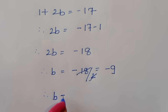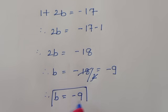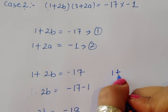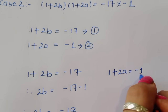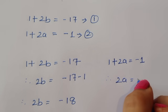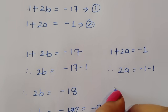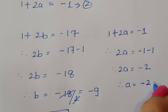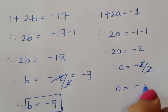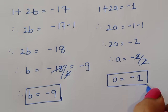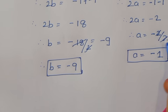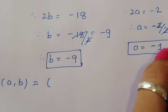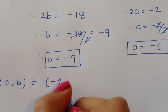For equation 2 in Case 2: 1 + 2a = −1, so 2a = −2, therefore a = −1. From Case 2 we get a = −1 and b = −9.